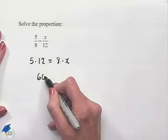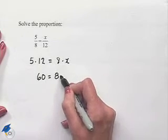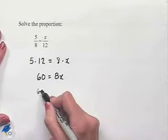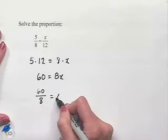5 times 12 is 60, so we have 60 equals 8x. We can then divide both sides of the equation by 8. That's 60 over 8 equals x.